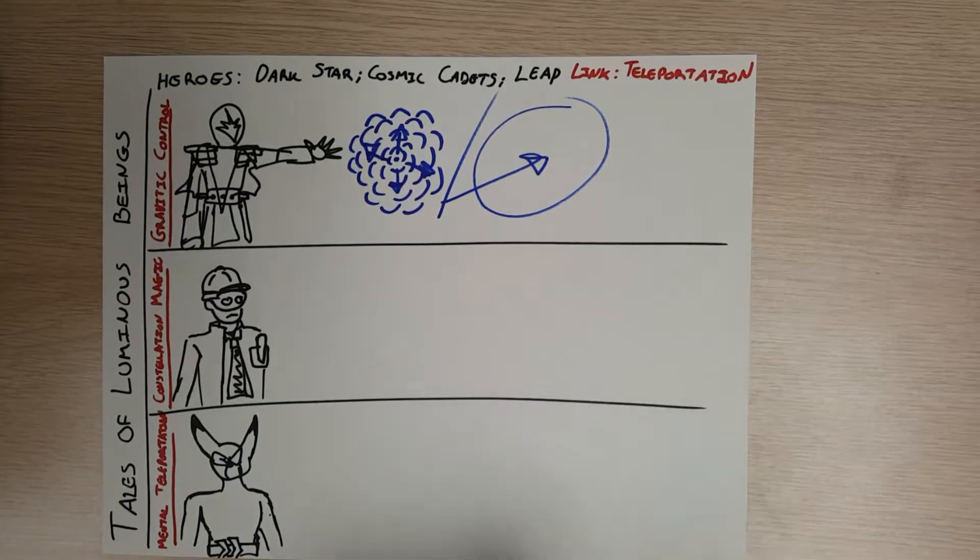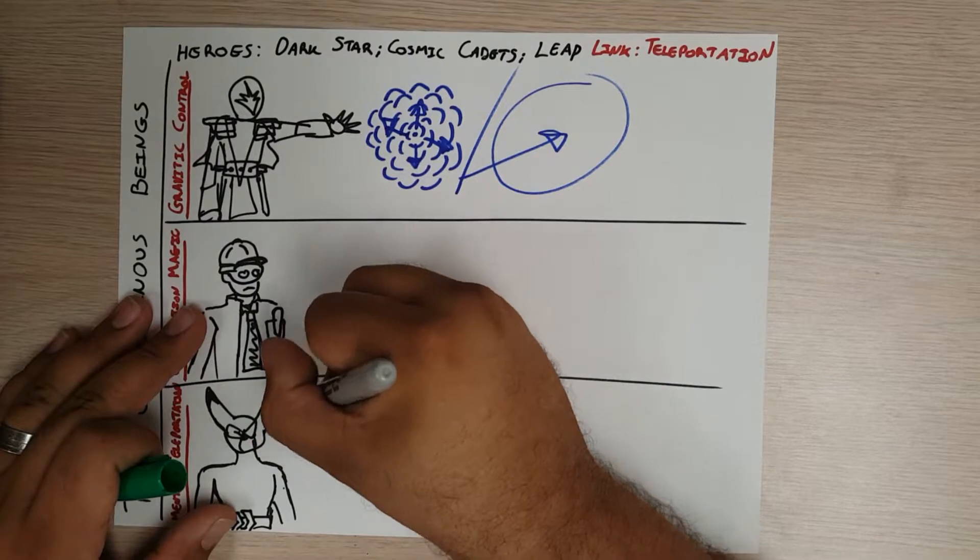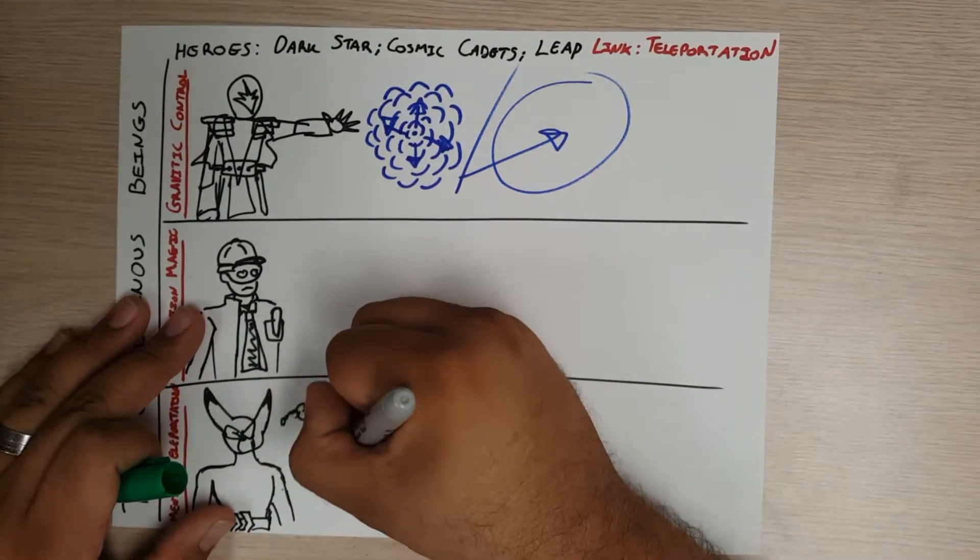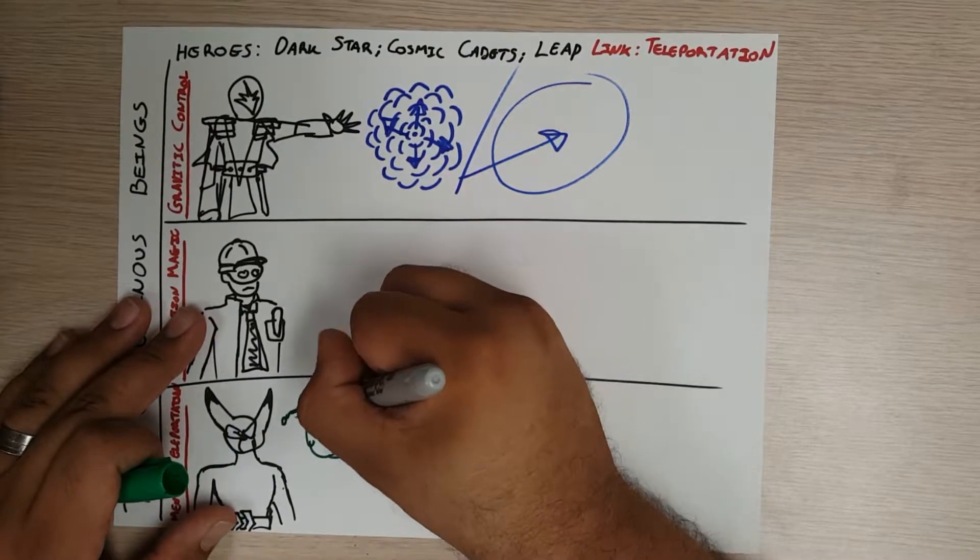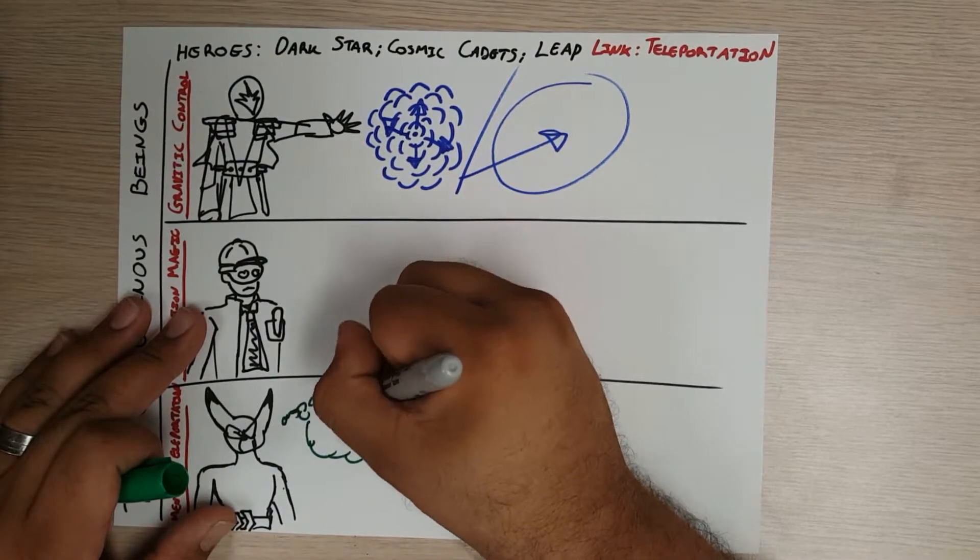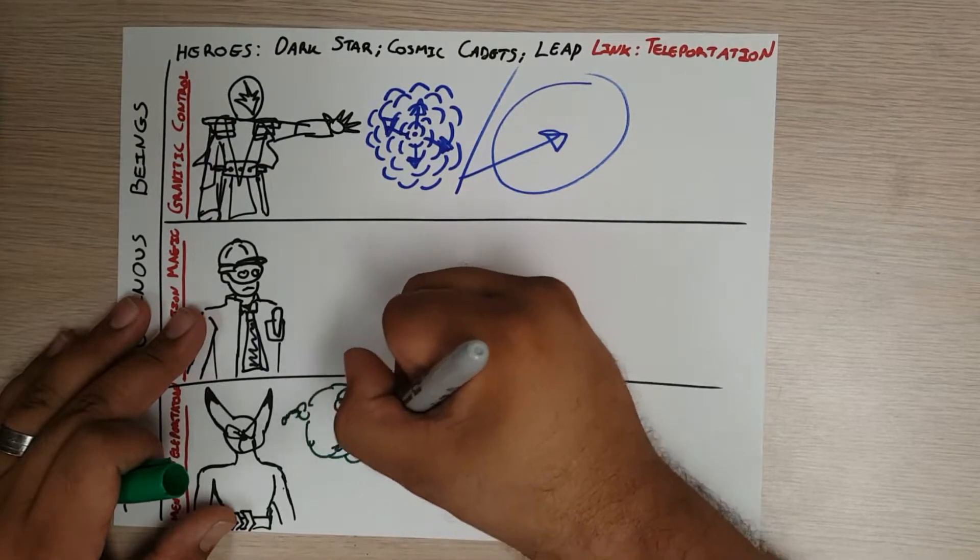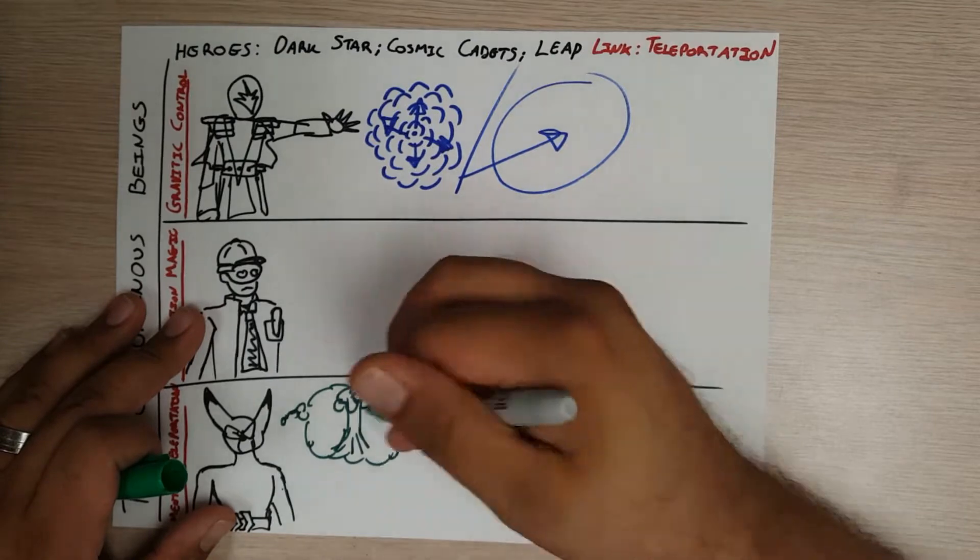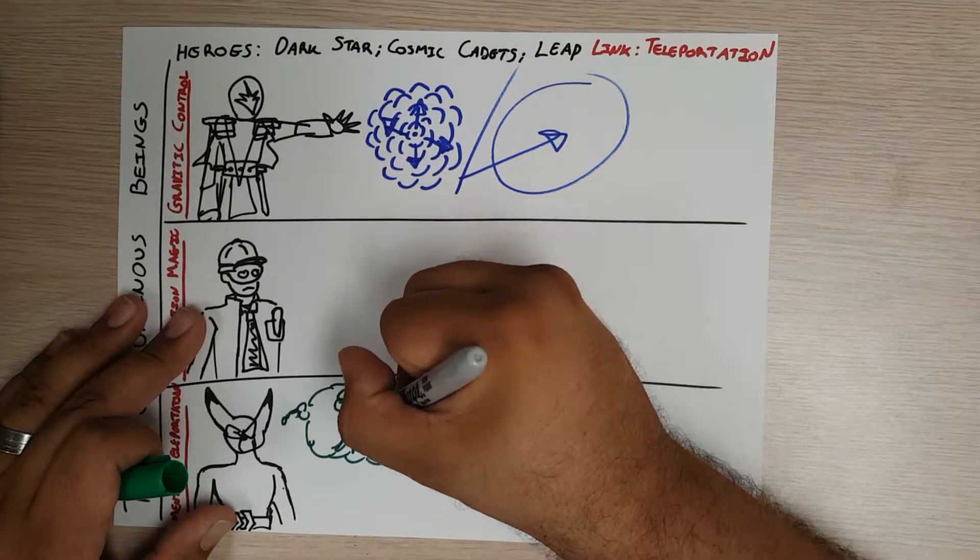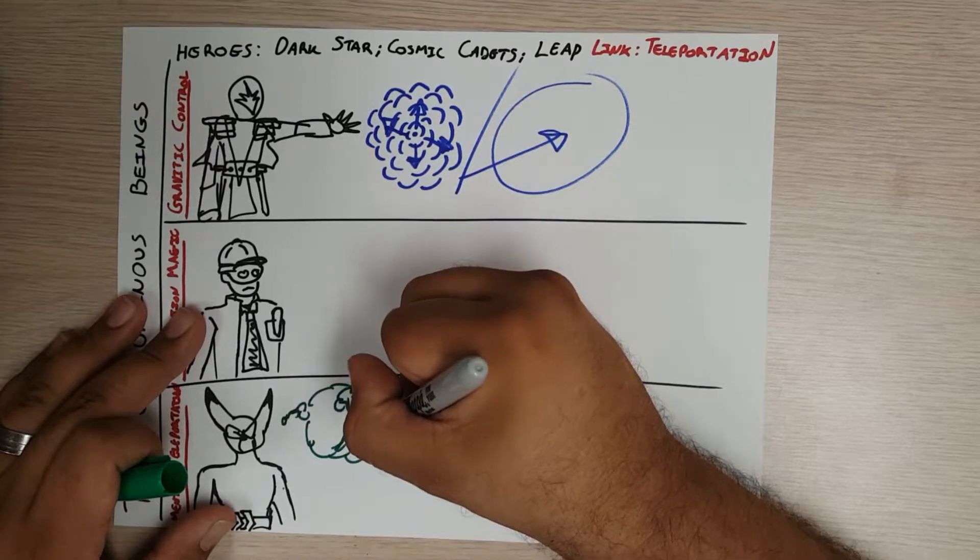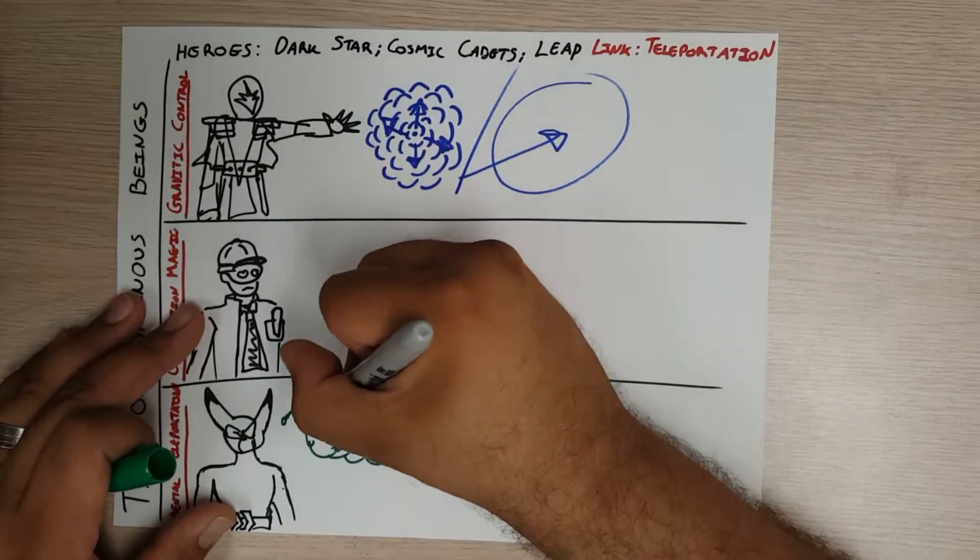Leap kind of just thinks about where he wants to go and then he can teleport wherever he wants. I don't have a clear link for where his powers come from, but his ability to teleport has to be related to their ability to teleport as well. He envisions himself in a place and then can go there.